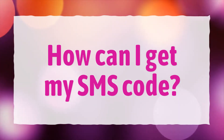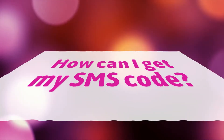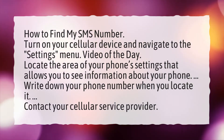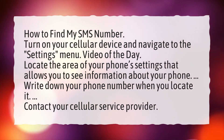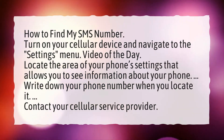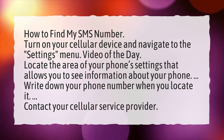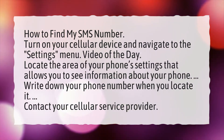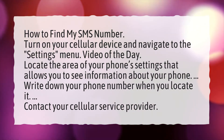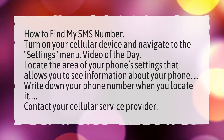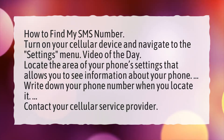How can I get my SMS code? How to find my SMS number? Turn on your cellular device and navigate to the settings menu. Locate the area of your phone settings that allows you to see information about your phone. Write down your phone number when you locate it, then contact your cellular service provider.